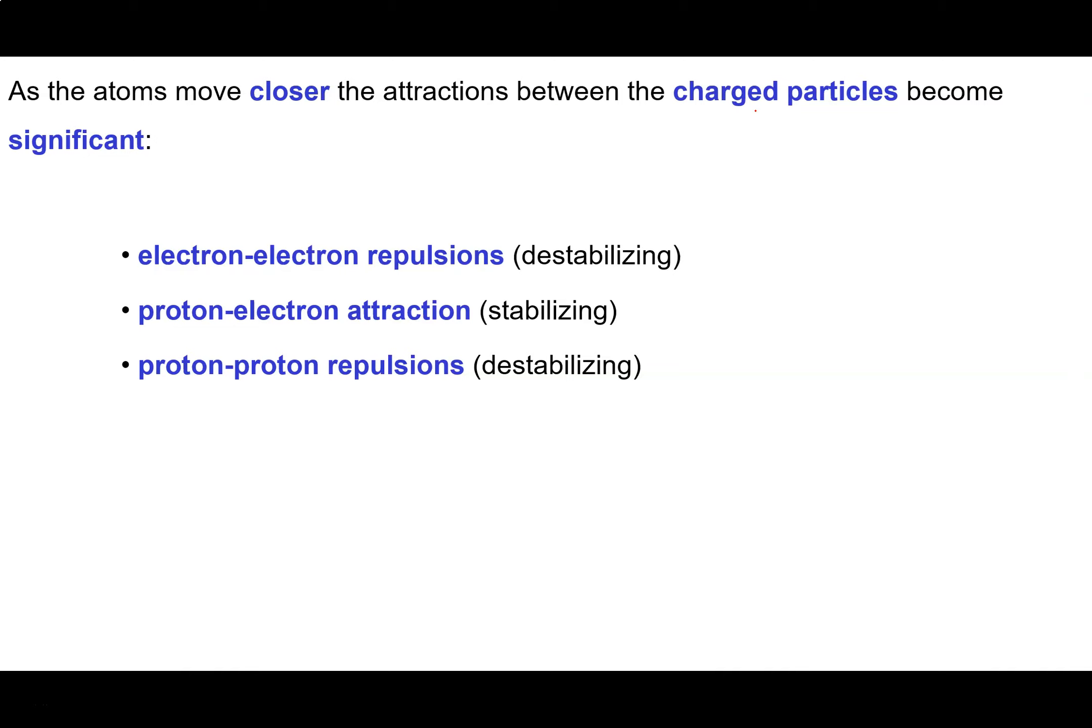So as the two atoms move closer together, there starts to be attractions and repulsions between the charged particles that make up the atoms. In particular, the electrons on the different atoms will begin to repel one another. This is a destabilizing effect. It's going to reduce the likelihood of these two atoms forming a bond between themselves.